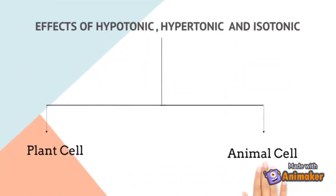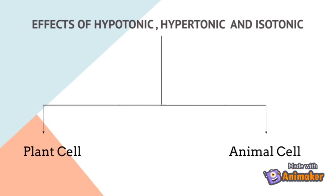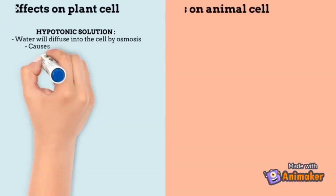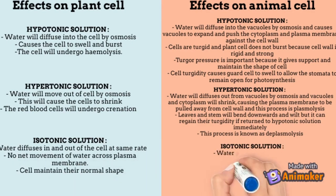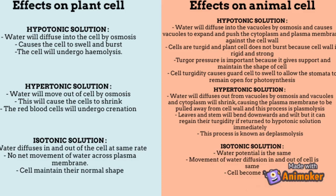Hypotonic, hypertonic, and isotonic solutions each have an effect on plant cells and animal cells. When red blood cells are placed in a hypotonic solution, water will diffuse into the cells by osmosis, causing the cells to swell and finally burst. This is because the plasma membrane is too thin to withstand the osmotic pressure. The red blood cells undergo haemolysis, and the resulting condition is called haemolysed.